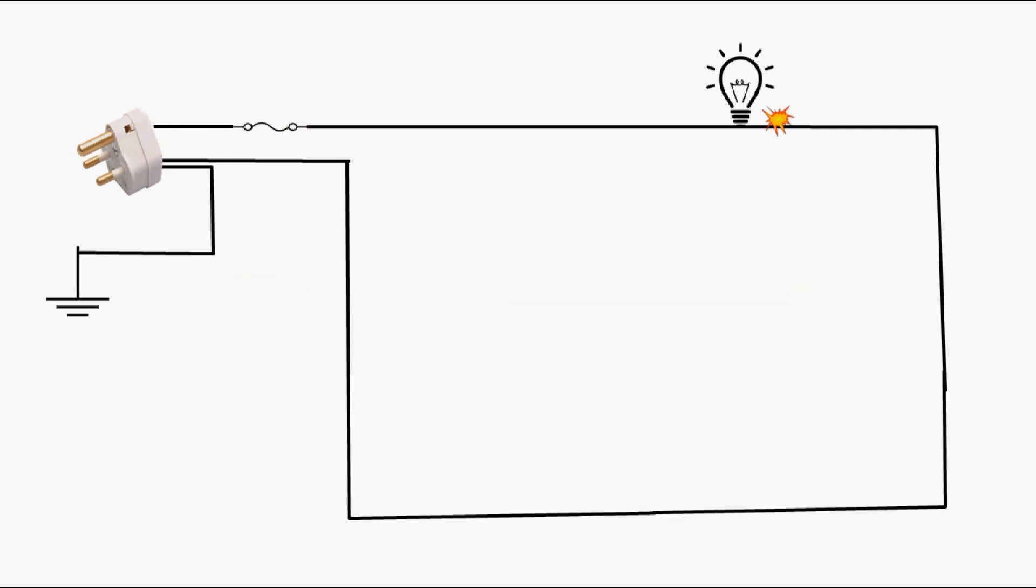Now, short circuit. It happens when two bare conductors, like two bare wires, come in contact with each other and electricity flows through a lower resistance path.